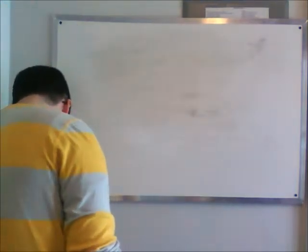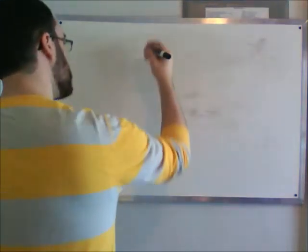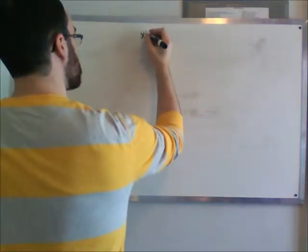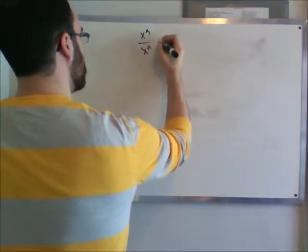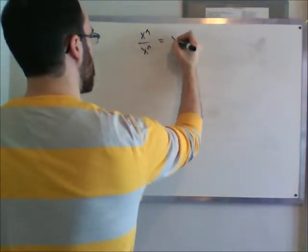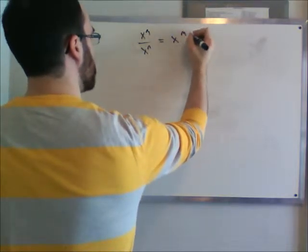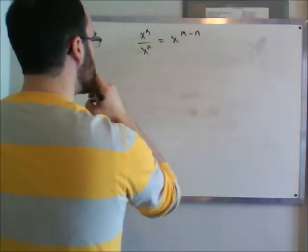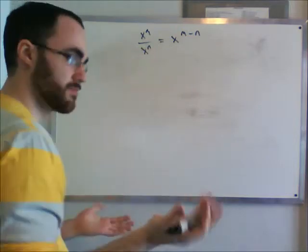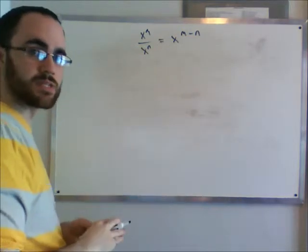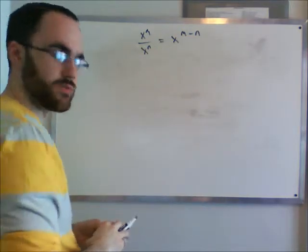Now let's talk about the reverse of these. If we have x to the n over x to the n, then that equals x to the n minus n. For example, 3 over 4 — you can work out the example based on these variables.